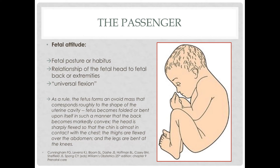First we talk about fetal attitude. Fetal attitude is actually the fetal posture or habitus, and this refers to the relationship of the fetal head to the fetal back or extremities. The picture on the right shows what we call universal flexion. The fetus forms an ovoid mass corresponding roughly to the shape of the uterine cavity, folded upon itself so that the back becomes markedly convex. The head is sharply flexed so that the chin is almost in contact with the chest, the thighs are flexed over the abdomen, and the legs are bent at the knees.